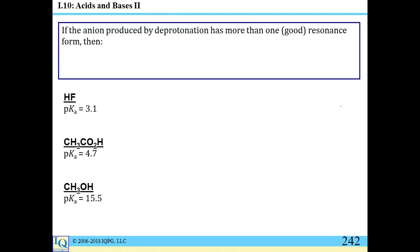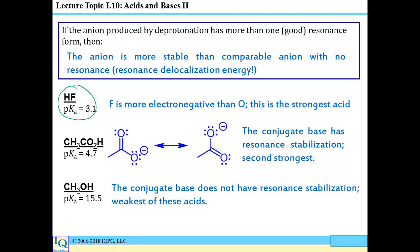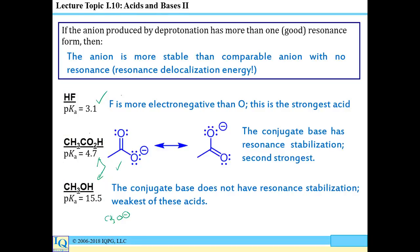Resonance is also a stabilizing influence on a species. Looking at hydrofluoric acid, acetic acid, and methanol: the strongest acid is hydrofluoric acid, because the conjugate base fluoride has the negative charge on the more electronegative fluorine. Acetic acid and methanol both lead to conjugate bases with a minus charge on oxygen — either methoxide or acetate. But because acetic acid has resonance contributors, its anion is much more stable, making it a much stronger acid than methanol.